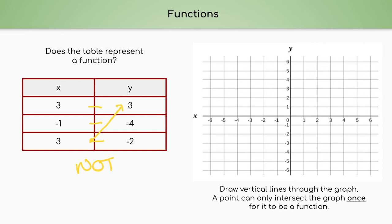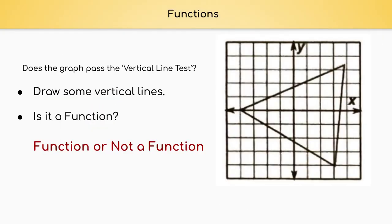Let's put this on the graph and use the vertical line test to see what it looks like when it is not a function. We'll graph positive three, positive three; then negative one, negative four; and then positive three, negative two. Drawing our vertical lines: the first vertical line passes through exactly one point, so we're good. But when I draw a vertical line through x = 3, it goes through two points. If the vertical line goes through more than one point, it is not a function.